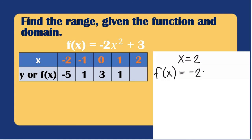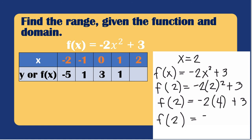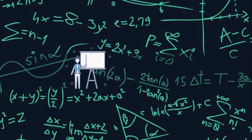Last one: if x = 2, f(2) = -2(2)² + 3. First solve 2² = 2 × 2 = 4. Then -2 × 4 = -8, so f(2) = -8 + 3. Unlike signs, subtract: 8 − 3 = 5 and copy the sign of the bigger number, which is negative. So f(2) = -5.